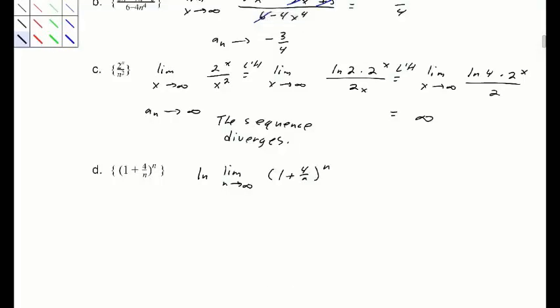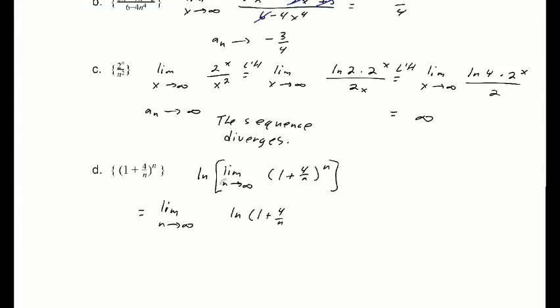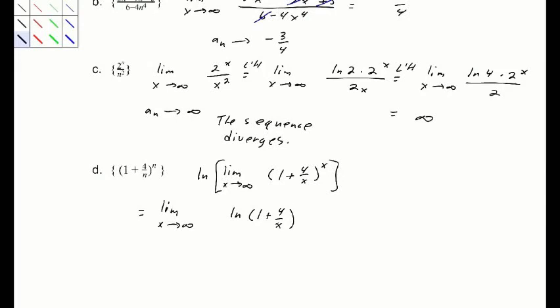Because the natural log is continuous, we can interchange the limit and the log. This gives the limit as x goes to infinity of x times the natural log of (1 plus 4 over x), treating it as a continuous function. A logarithmic property brings the x down, but this is still in the form infinity times 0.